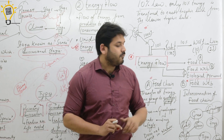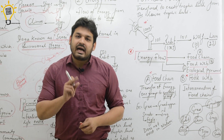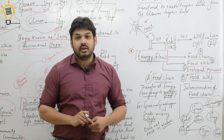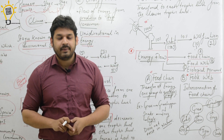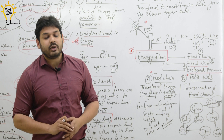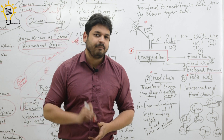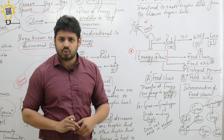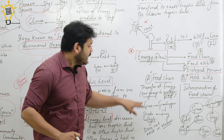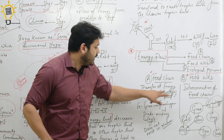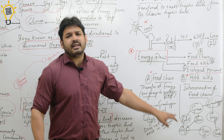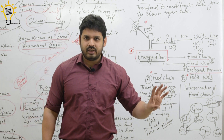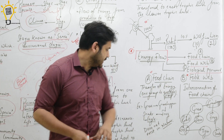We will discuss food chain, food web, and ecological pyramids. Food chain is the transfer of energy from one group to another — from one organism to another in sequence. This transfer is called the food chain.